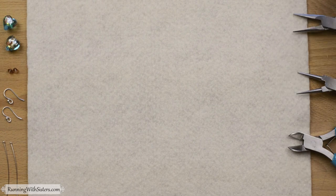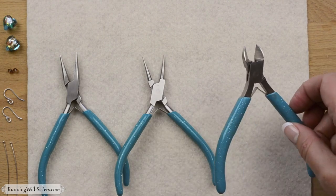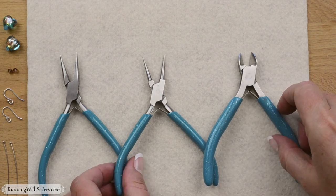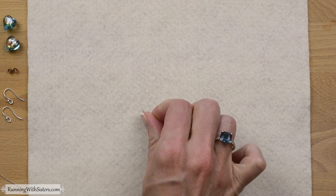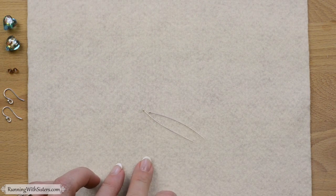Here's what you need to make the earrings. You need chain nose pliers, round nose pliers, and wire cutters or flush cutters. Then you need two head pins, and the ones we chose have a little ball on the end just as a nice detail.